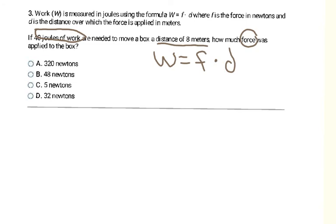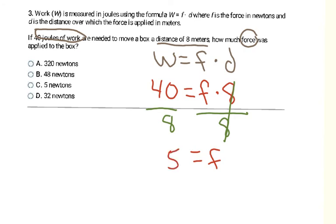So I'm going to plug in what I know. I know W is 40. And I'm looking for force. So I'm going to rewrite the F. And I know distance is 8. So now I'm just going to have to use my equation solving abilities to solve for force, to solve for the F. So it's force times 8. To undo the multiplication, I'm going to divide both sides by 8. Remember, whatever you do to one side, you have to do to the other to keep the equation balanced. These 8's cancel. And then I'm just left with F on the right side. And on the left side, I have 40 divided by 8, which is 5. So it has a force of 5 newtons. So my answer is C.